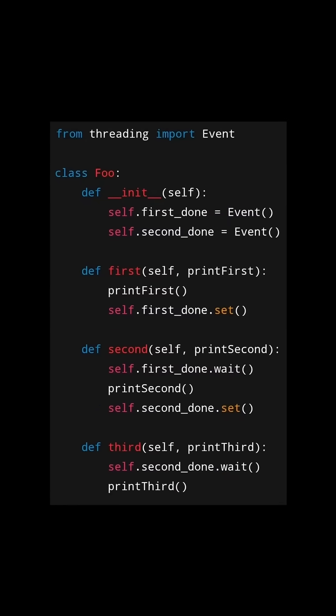If a thread comes in and calls the third method, it will first wait on the second_done event. Once the second_done event is set and released, execution continues to the next step. Finally, we print third.